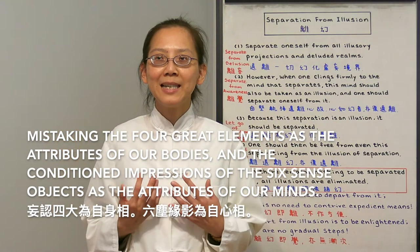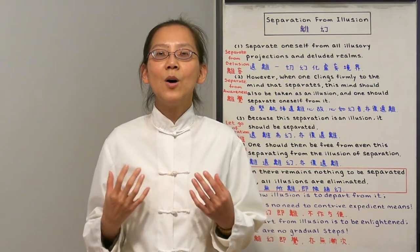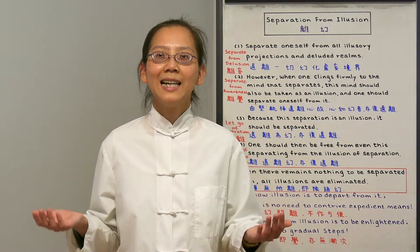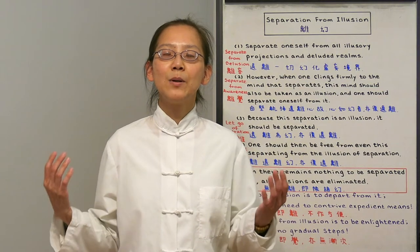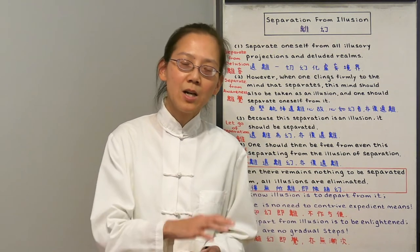We think this physical body is me and the mind that grabs onto the 6 sense objects as me — this is all just our illusion. There is in reality no flower in the sky, yet the sick man mistakenly clings to it. Because of his mistaken clinging, he is not only deluded about the intrinsic nature of the empty sky, he is also confused about the arising of the flower. Because of his false existence to which he clings, he remains in the turning wheel of birth and death. The empty sky symbolizes our perfect nature without any ignorance, and our ignorance is what makes us keep reincarnating.